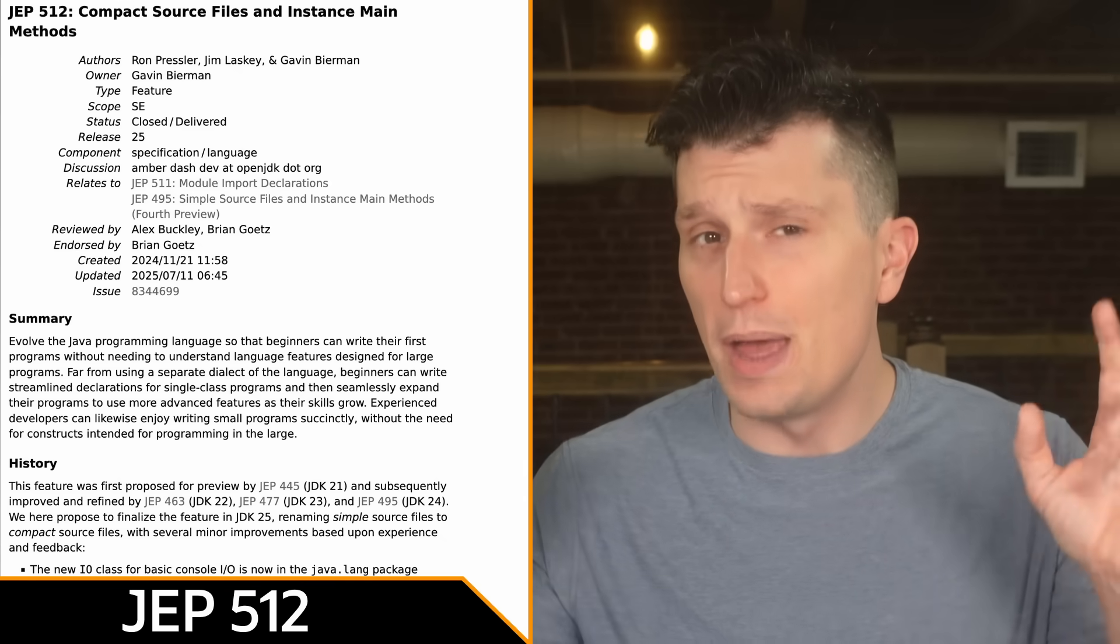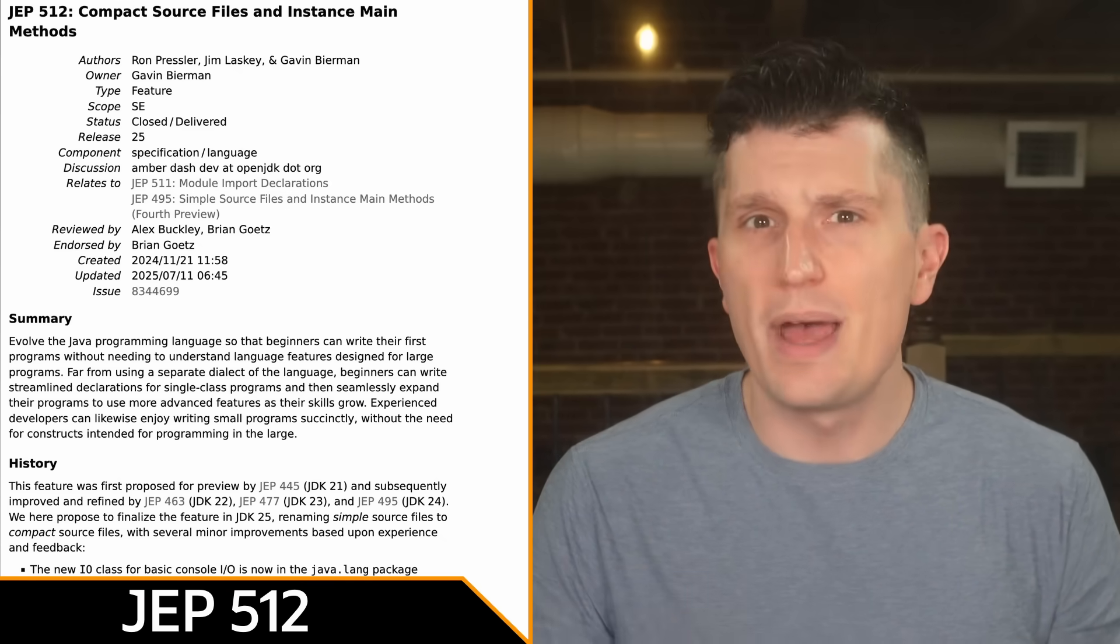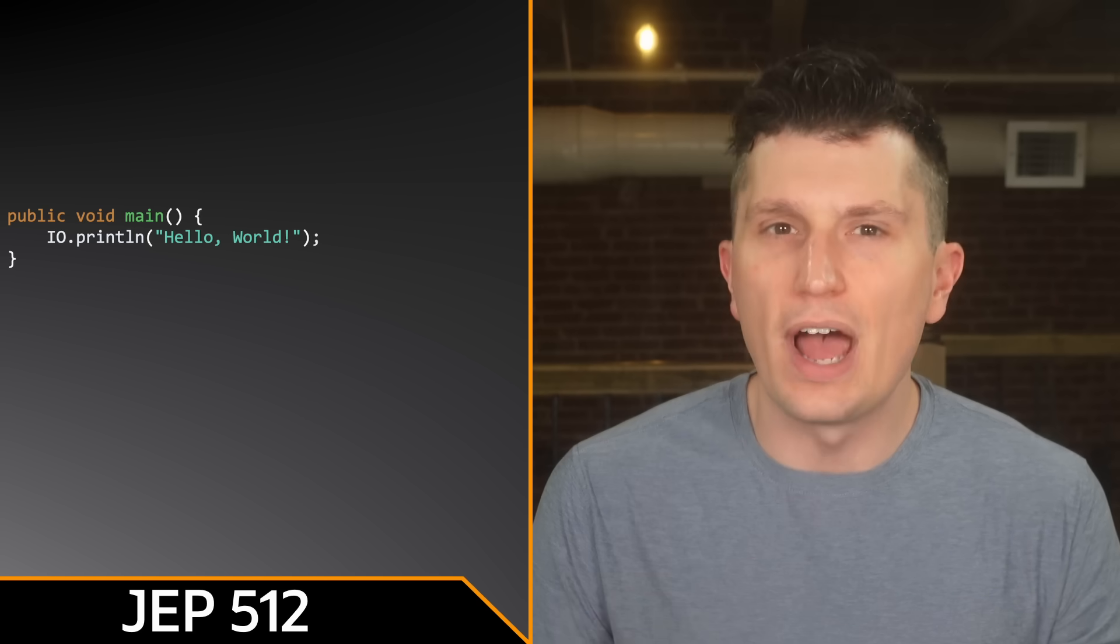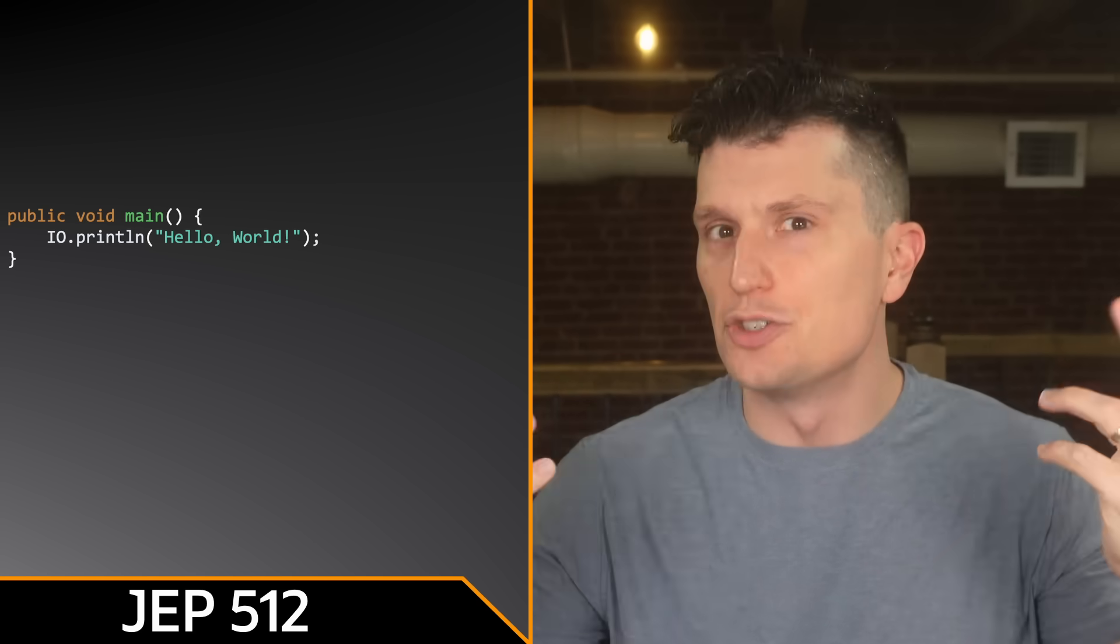The key feature of the paving the on-ramp feature set, compact source files and instance main methods is finalized with JDK 25. This simplifies the requirements when writing very simple applications, helpful for educational purposes and when writing scripts in Java.